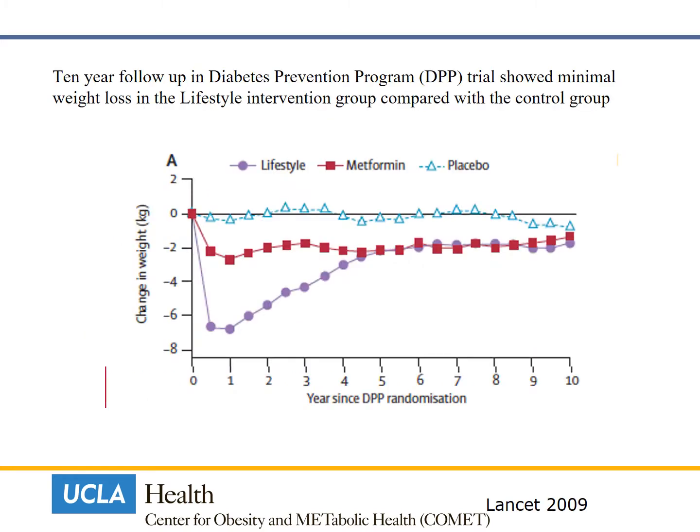Almost all clinical trials showed that most obese patients cannot keep the lost weight in the long term. Data from diabetes prevention program trials showed minimal weight loss in the lifestyle intervention group compared with the control group after 10 years. The lifestyle intervention group patients lost more than 6 kg in the first year; however, over the next 10 years, they gained most of the lost weight back and had almost the same weight as the control patients.